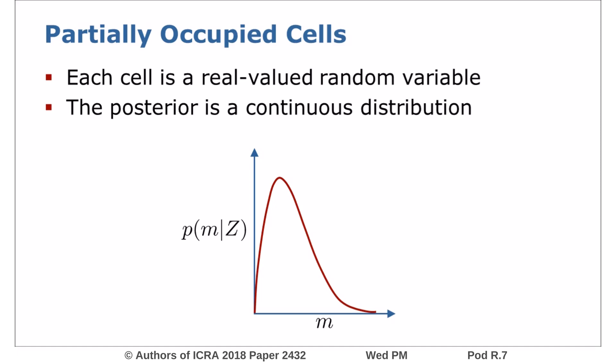For the basic beam-based laser model that counts hits and misses within each cell, the posterior is a beta distribution. In the paper we also treat a more complex beam-based sensor model.